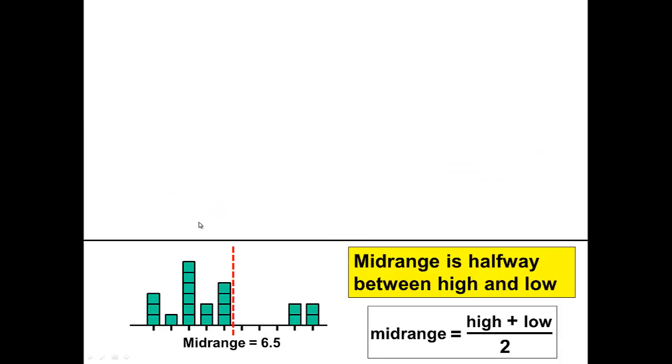Midrange. Midrange is halfway between high and low. High plus low divided by two. The midrange of the group is 6.5 years old. So how would a daycare use this number? Well, the daycare may want to use this to divide their groups instead of the median because instead of using the number of children, it may want to use the ages of the children instead.